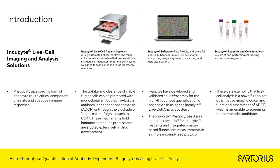Phagocytosis, a specific form of endocytosis, is a critical component of both innate and adaptive immune responses. The uptake and clearance of viable tumour cells can be promoted with monoclonal antibodies via antibody-dependent cellular phagocytosis, also known as ADCP, or through the blockade of don't-eat-me signals such as CD47. These mechanisms hold immunotherapeutic promise and are studied extensively in drug development.